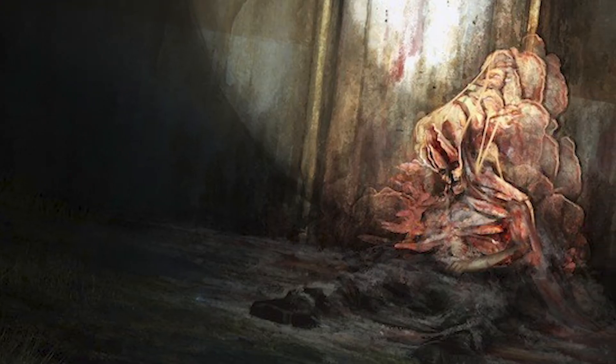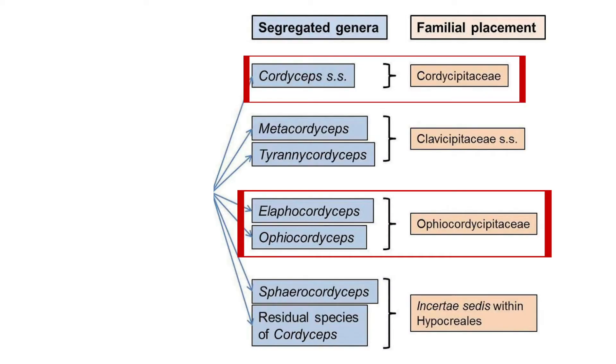To cut to the chase, it kind of does. The fungus that they used in The Last of Us is actually based on a real world fungus — a fungus belonging to the family called Ophiocordyceps. That's kind of confusing because in The Last of Us they call it the cordyceps fungus, which is a completely different taxonomic group, but we're going to call it Ophiocordyceps. That's its real name and I'm going to tell you a little bit more about it.